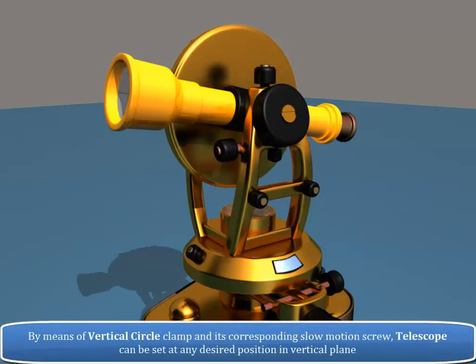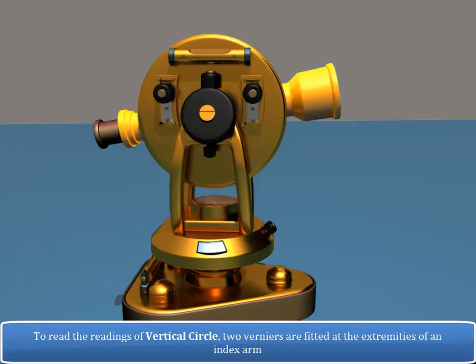By means of vertical circle, clamp and its corresponding slow-motion screw, telescope can be set at any desired position in vertical plane. To read the readings of vertical circle, two verniers are fitted at the extremities of an index arm.